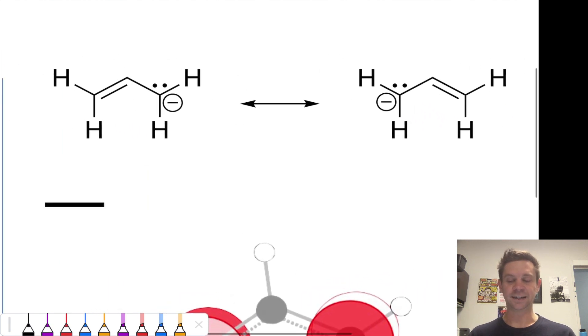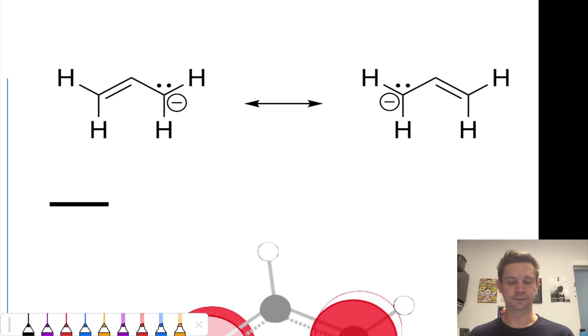Likewise, for the allyl anion, if I simply add two electrons to the allyl cation, I end up with the allyl anion. I can push electrons here into a new pi bond and push these onto this CH2 and show that the negative charge is now delocalized over the two ends of this pi system.